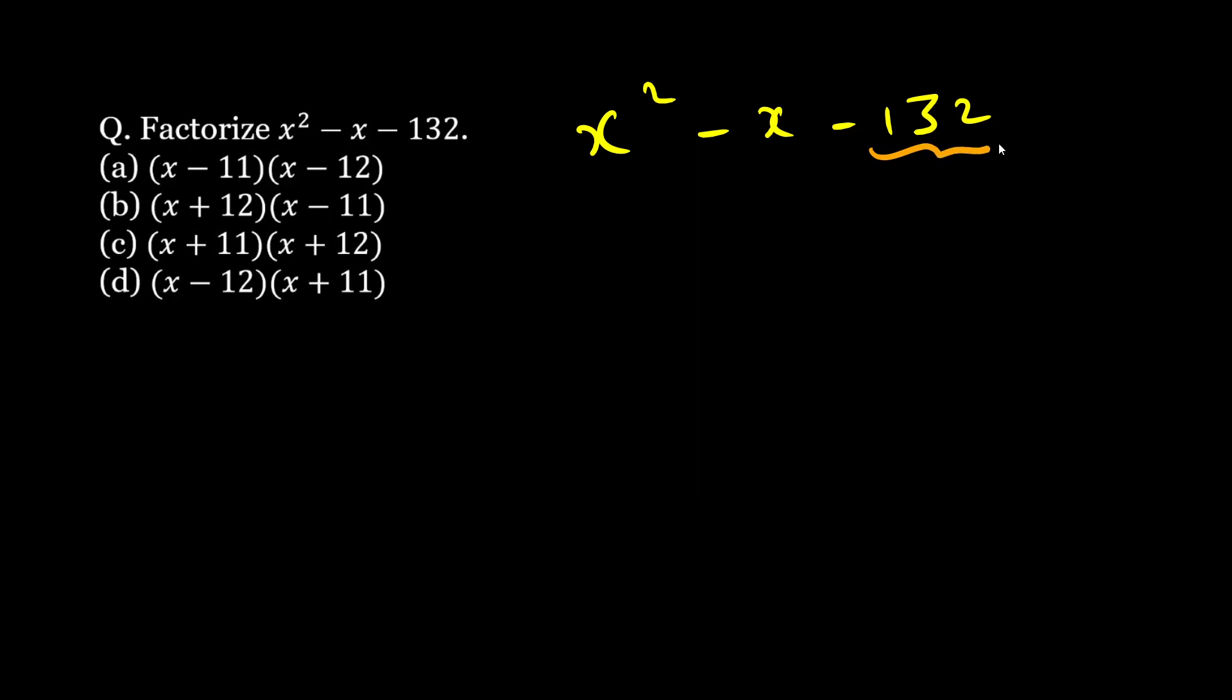The thing is, I will take this number 132 and I will take the coefficient of x squared and multiply them, so I will multiply that would be minus 132. I will factorize this into two factors such that their sum is this coefficient, so minus one.